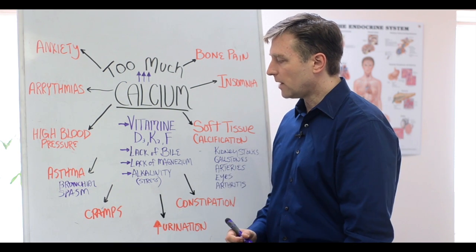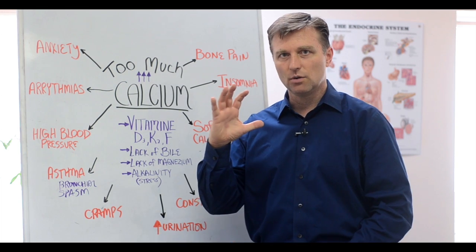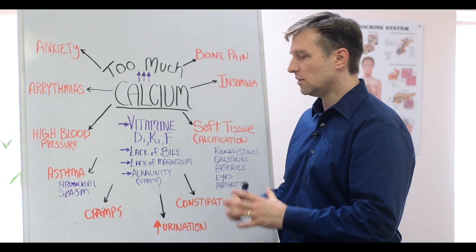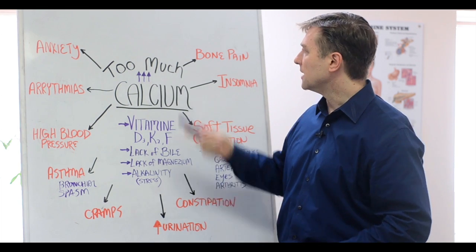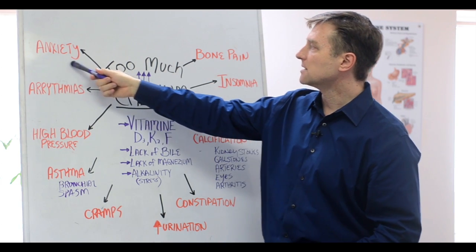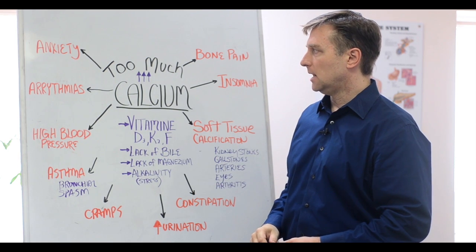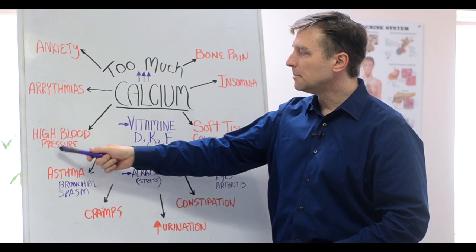Then we have the cramps like muscle cramps, especially at night. If your toes start bending like this and you flex them and it starts cramping, that's too much calcium. Anxiety, yeah, anxiety is one of the symptoms. Arrhythmias. That's a big one. High blood pressure.